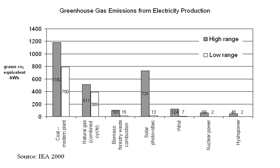Individual studies show a wide range of estimates for fuel sources arising from the different methodologies used. Those on the low end tend to leave parts of the life cycle out of their analysis, while those on the high end often make unrealistic assumptions about the amount of energy used in some parts of the life cycle. In 2007, the Intergovernmental Panel on Climate Change stated that total life cycle GHG emissions per unit of electricity produced from nuclear power are below 40 grams CO2 EQ per kWh, similar to those for renewable energy sources.